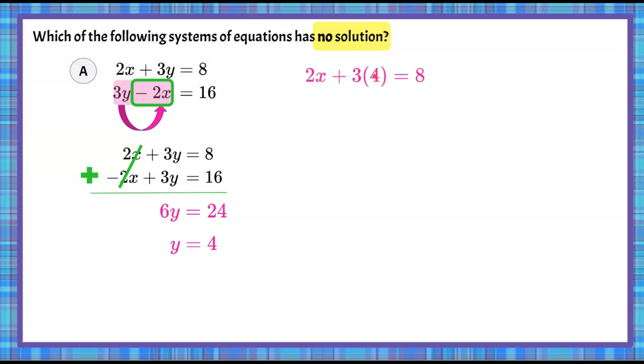So 2x plus 12, 3 times 4 is 12. We're going to subtract 12 from each side. This is a 0 pair, so I'm left with 2x equals negative 4, 8 minus 12 is negative 4. Divide both sides by 2, and we get that x is equal to negative 2.